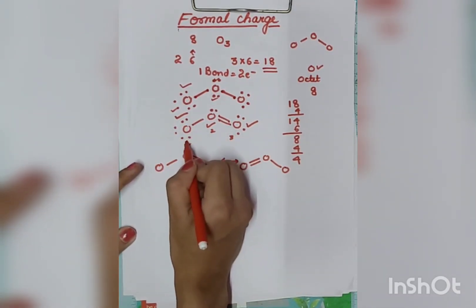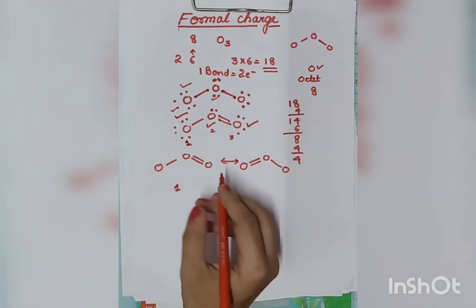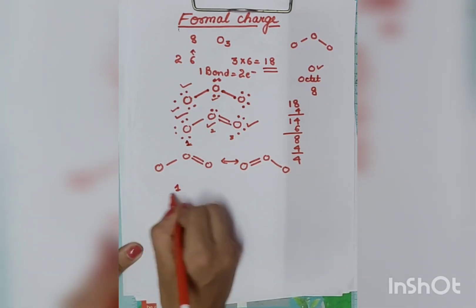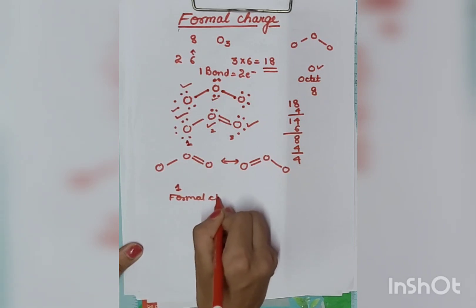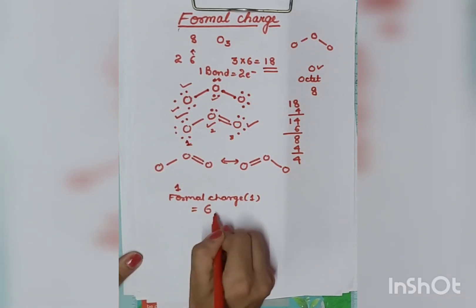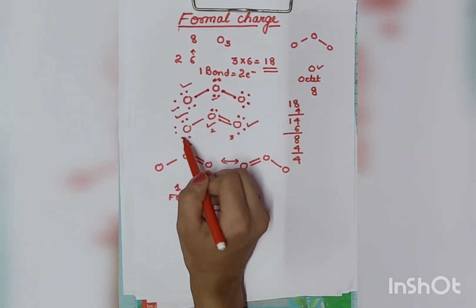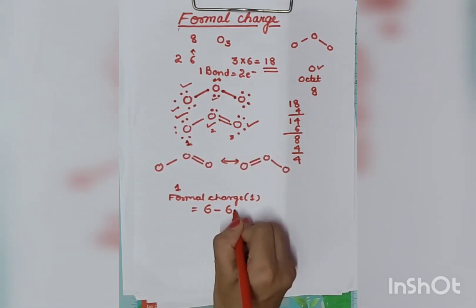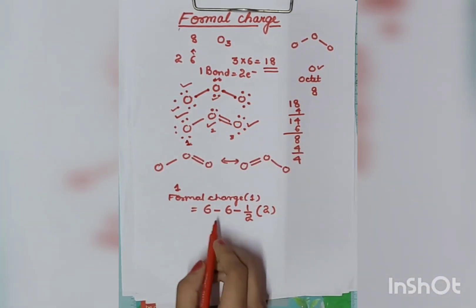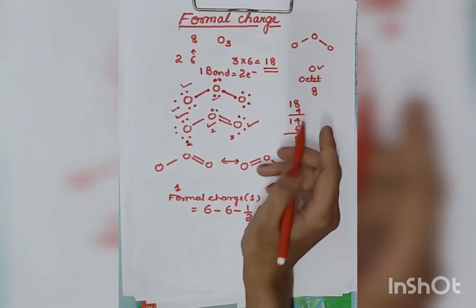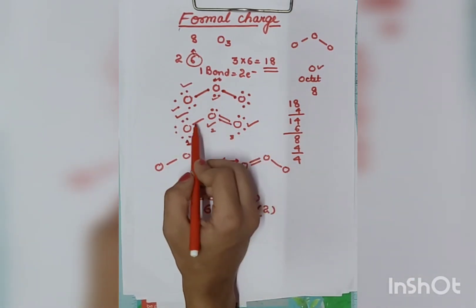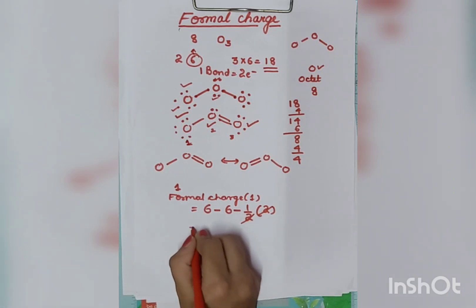We will use formal charge. The formula is: Formal charge = outermost (valence) electrons − lone pair electrons − half of bonding pair electrons. For atom 1: valence electrons = 6. Lone pair electrons on atom 1: count 1, 2, 3, 4, 5, 6 — that's 6. Bonding pair electrons: 1, 2 — that's 2. So: 6 − 6 − half of 2 = 6 − 6 − 1 = −1. Atom 1 has a formal charge of −1.